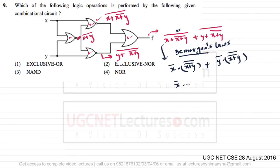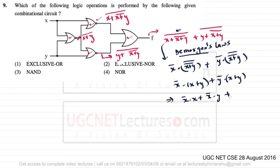This can be further written as X' · (X + Y) + Y' · (X + Y). If we open the brackets, this becomes X'·X + X'·Y + Y'·X + Y'·Y. Now X'·X is 0 and Y'·Y is also 0.